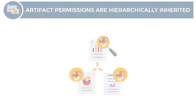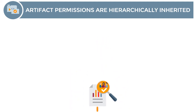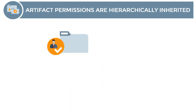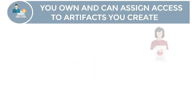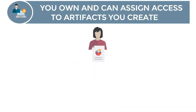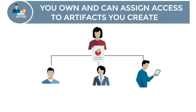Access permissions are also inherited and applied downwards to child artifacts. For example, if you have View permissions on a parent folder, you can also view any child folders. You are the owner of any artifacts that you create, which means you can modify, delete, and grant others access to them. The type of permissions that you can grant depends on the artifact type.